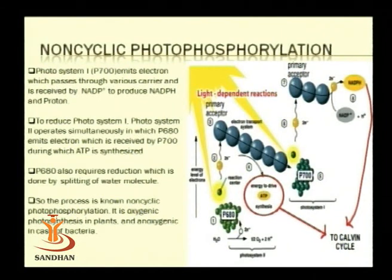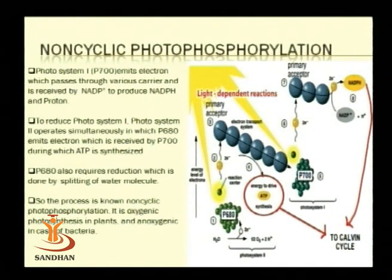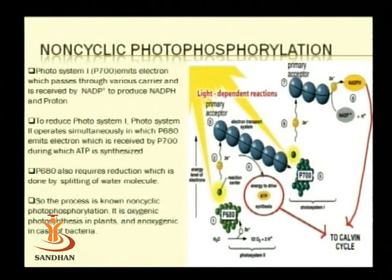In non-cyclic photophosphorylation, the electron removed from photoactivated chlorophyll does not return back — it is used for generation of reducing power, with NADP being reduced to NADPH. Therefore, during non-cyclic photophosphorylation, photosynthetic bacteria require a chemical compound to work as electron donor so that oxidized chlorophyll can be reduced back to its ground state. A variety of inorganic compounds are used as electron donors. Notably, bacteria cannot use water as an electron donor — they use compounds other than water.